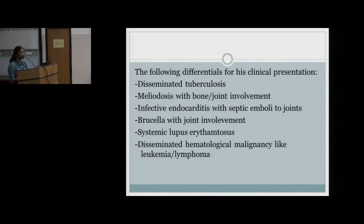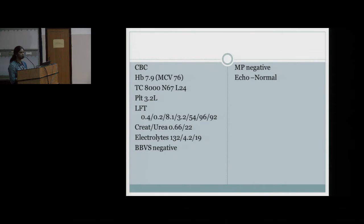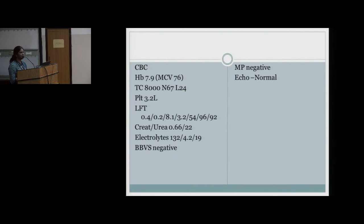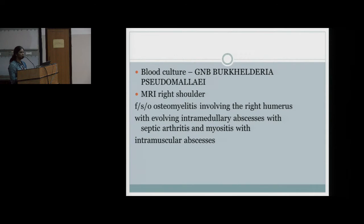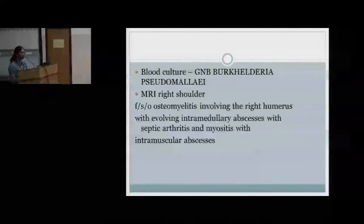Other less common differentials considered were systemic lupus erythematosus and disseminated malignancy like leukemia or lymphoma. Investigations showed microcytic anemia with hemoglobin of 7.9; total counts were normal at 8000 with neutrophils of 67%; platelets were normal. LFTs showed mild transaminitis with SGOT/SGPT of 54 and 96; creatinine, urea, and electrolytes were normal. Blood-borne virus screen was negative; malarial parasite and brucella antigen were both negative. ECHO was normal with no vegetation. Blood culture grew gram-negative bacilli: Burkholderia pseudomallei.